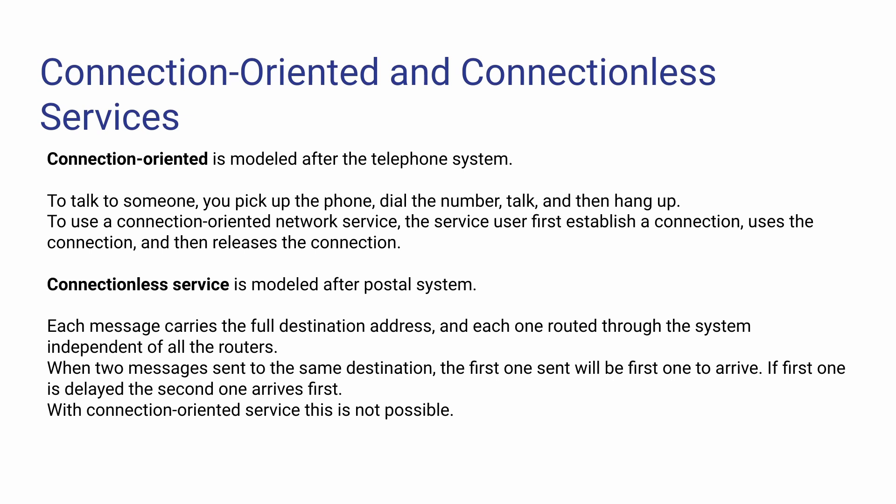Connectionless service is modeled on the postal system. Every message carries the full destination address. If two messages are sent to the same destination, the second one may arrive first. So if there are two messages with the same destination, the first one is posted and if it is delayed, the second one arrives first. Connection-oriented service requires a connection to be established first, which is not the case with connectionless service. Connectionless service is based on the postal system.